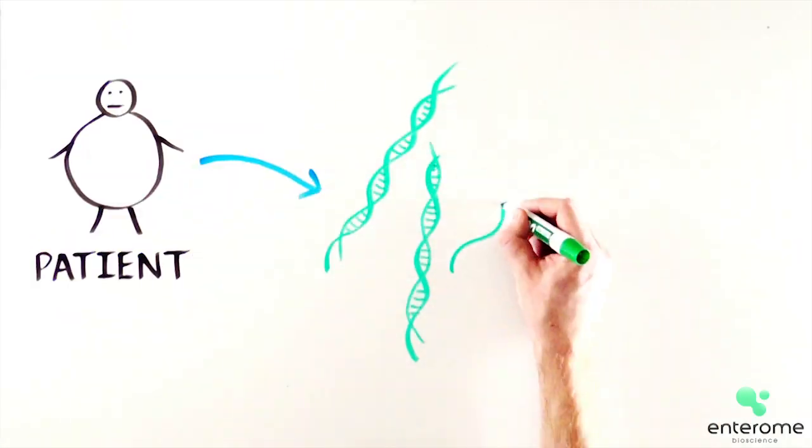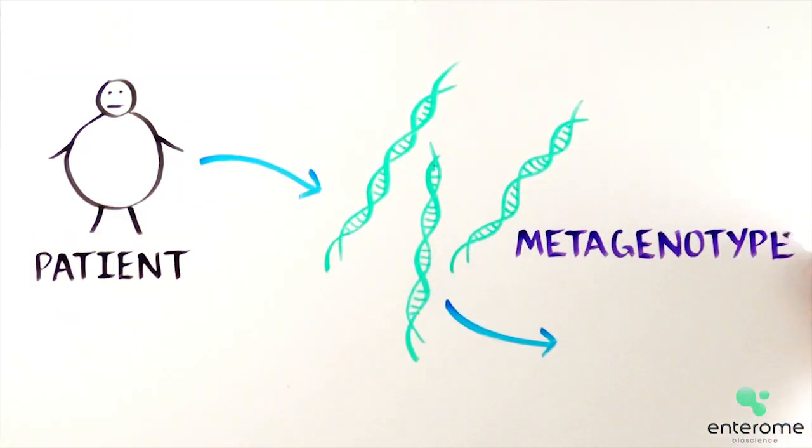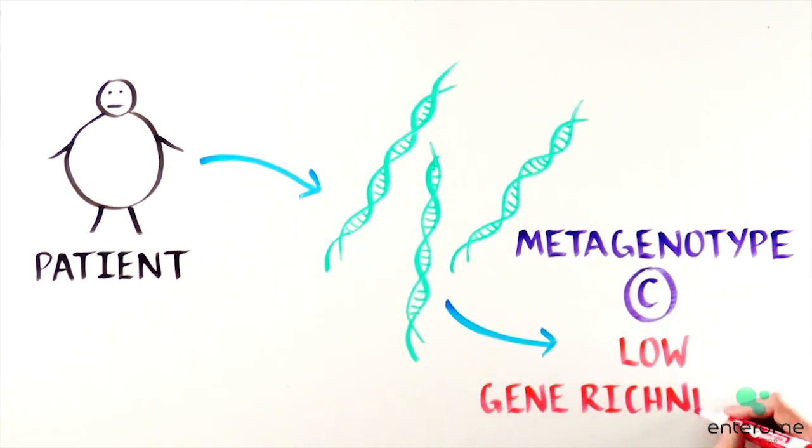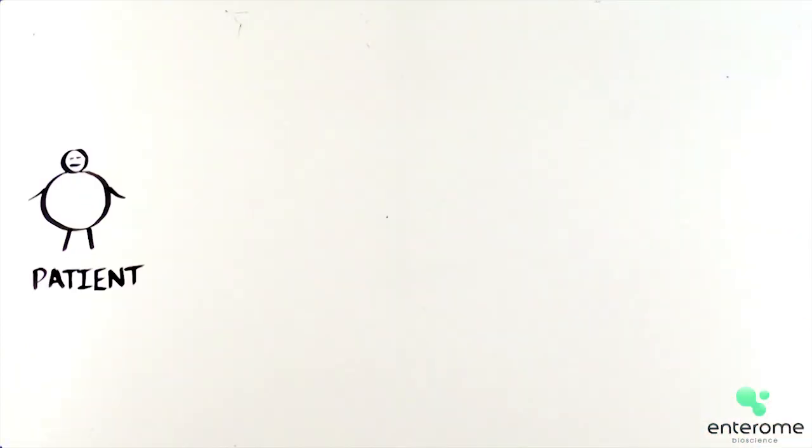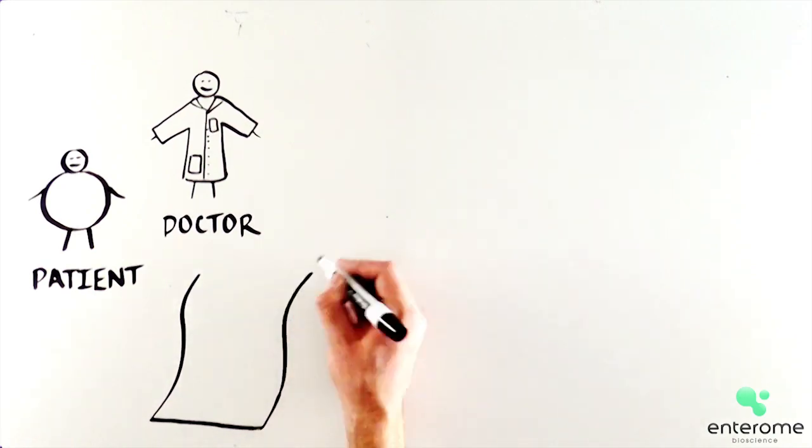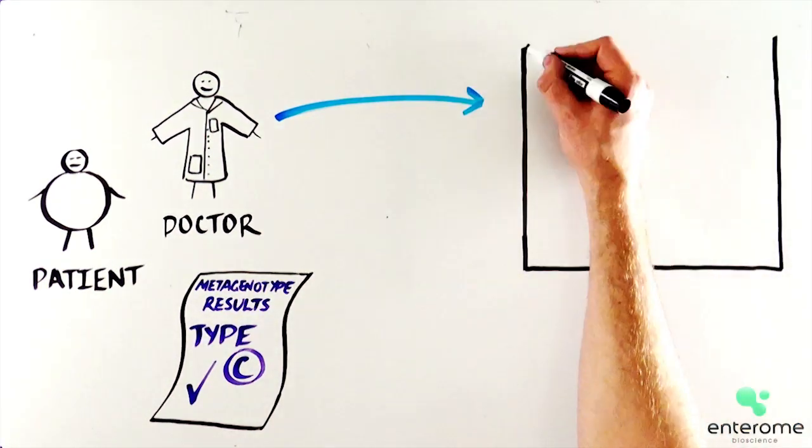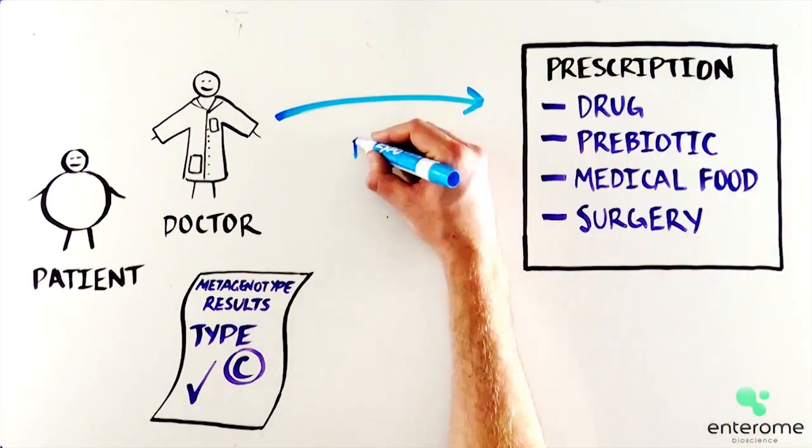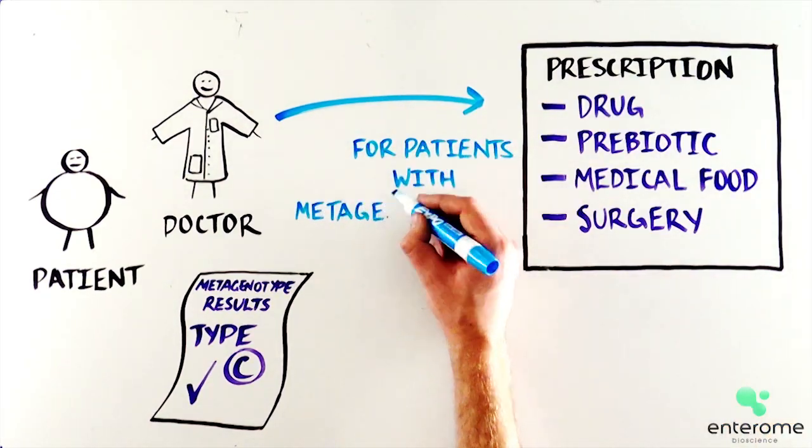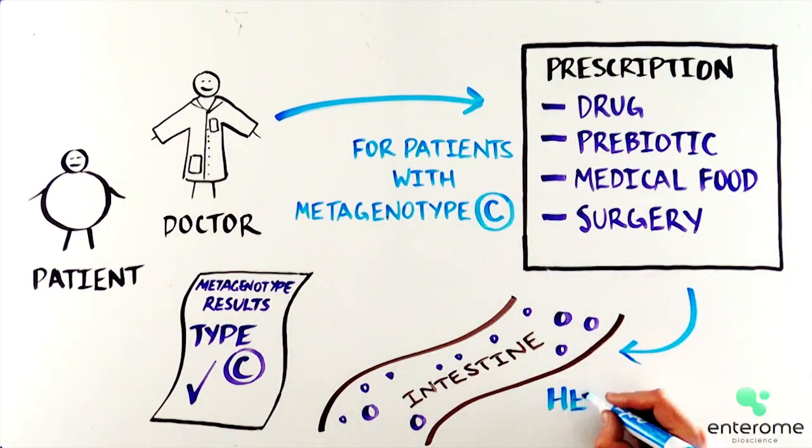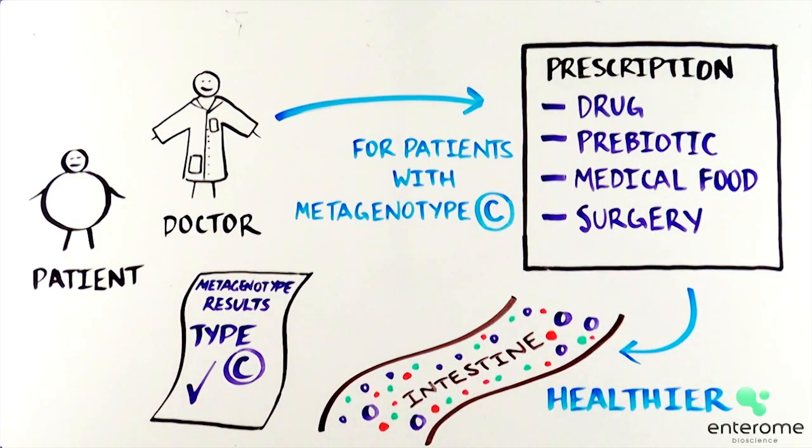In this case, our patient's metagenotype actually shows reduced gene richness of the gut microbiome. So our hypothetical patient returns to see his doctor. Based on the metagenotype test results, the doctor might prescribe an intervention that has been successful amongst obese patients with the same metagenotype and that can promote the development of a healthier and more diverse microbiome.